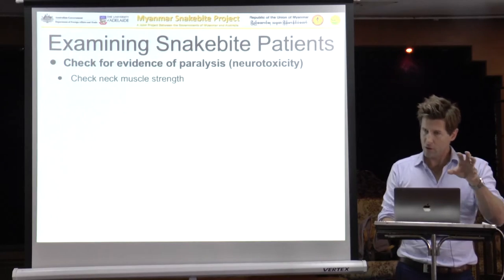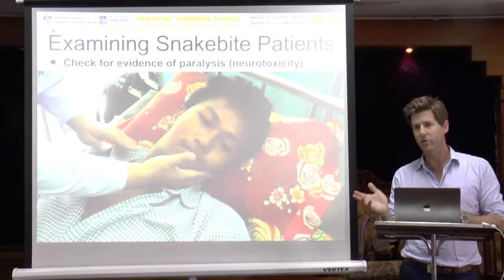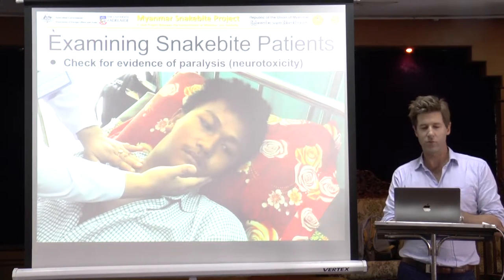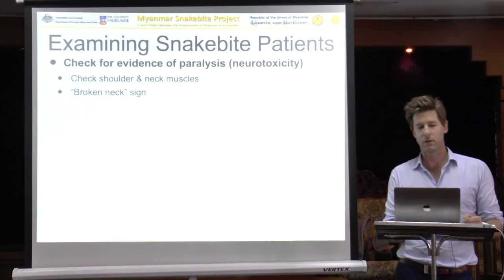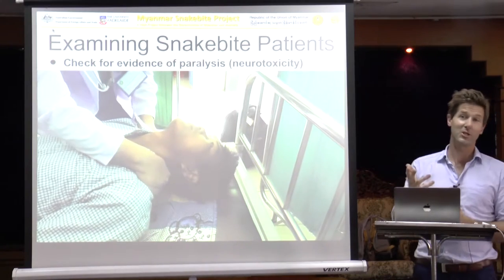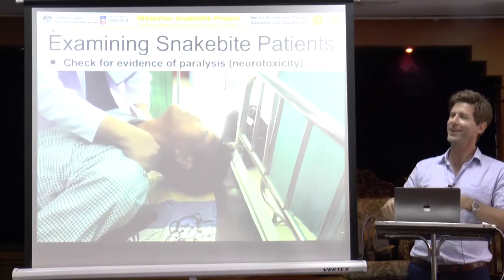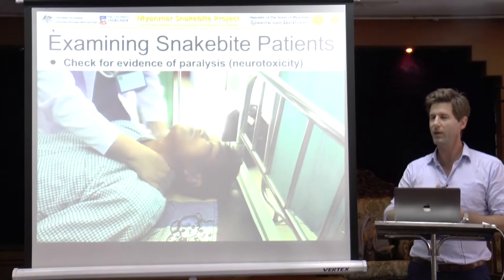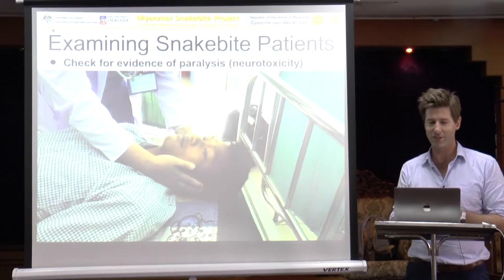The next thing to do is assess the strength of the neck musculature — this is very easy. Turn the head left in opposition and check the muscle strength. In the same way, we check for the broken neck sign. Normally if you lift somebody up by their shoulders they will take their head with them. If they can't do that, it makes you concerned that perhaps there is some weakness in the neck musculature.